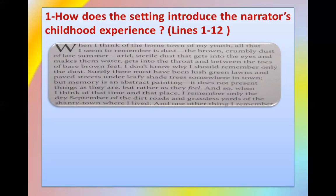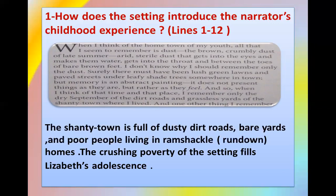Let's read between the setting and the childhood experience as found in these lines. The right answer is that the shanty town — found in the last line of the text — is full of dusty dirt roads, bare yards, and poor people living in ramshackle, meaning run-down, homes. The crushing poverty of the city fills Elizabeth's adolescence. Elizabeth is the main character of our story today.